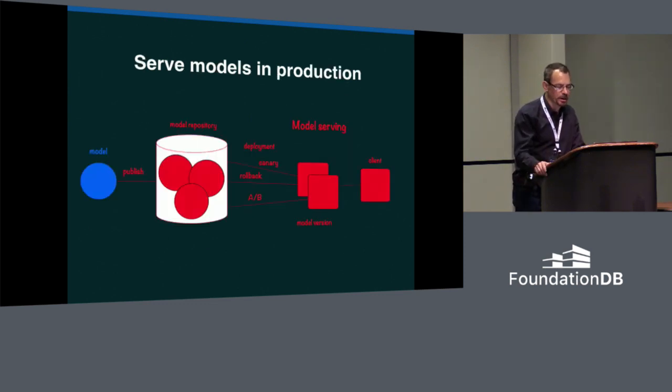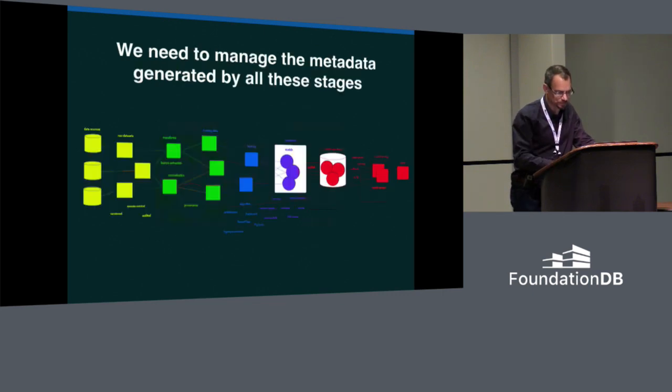Finally, we may want to serve a model in production. But as with any production system, a model will go through versions as it is updated and improved. You may have canary deployments or roll back to a previous version or deploy multiple versions for A-B testing. We want to store and manage this metadata in a unified framework that tracks provenance for each version of each entity.